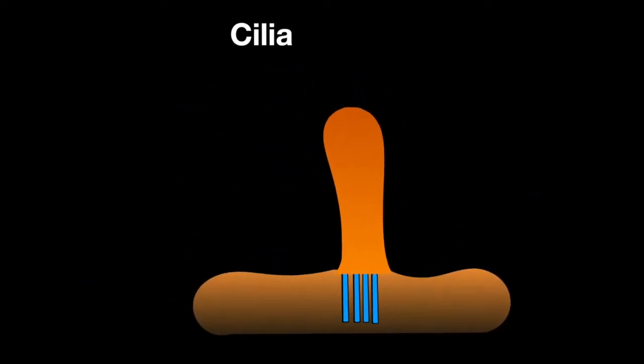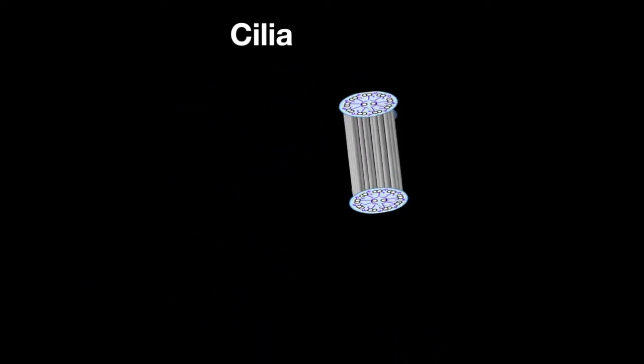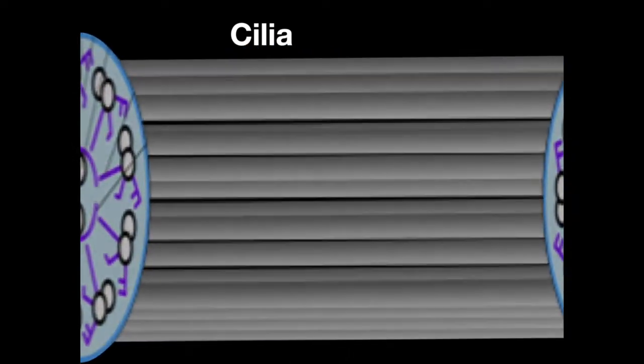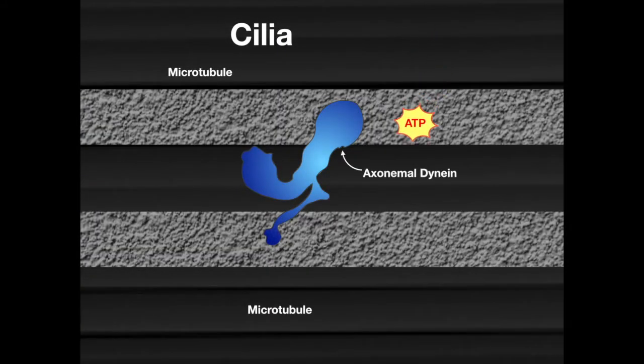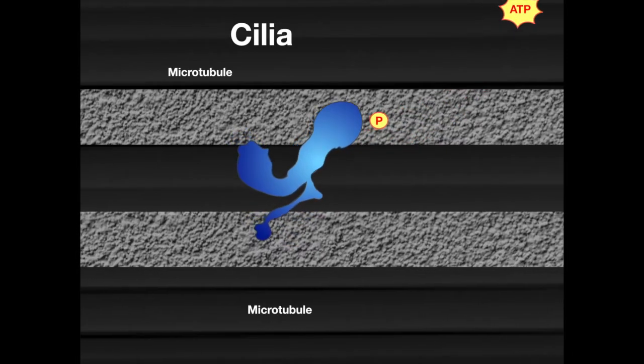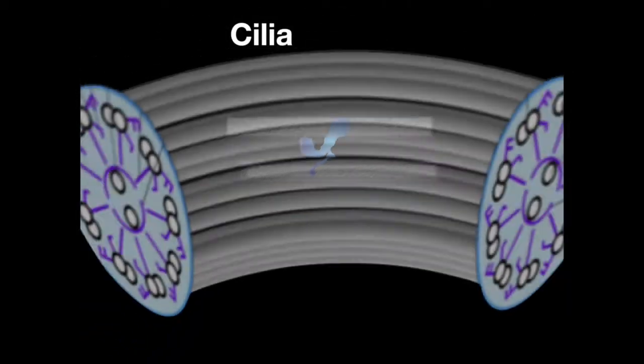Let's check out the inner workings of the cilia microtubules. Axonemal dynein is an ATPase that utilizes ATP to slide the doublets past each other, causing the cilia to bend.